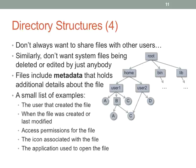The metadata includes: the user that created the file, when the file was created or last modified, access permissions, icon associated with the file, and application or applications that can be used to open it. Typically that last one is stored somewhere else — you use the extension to figure that out, although some operating systems are clever enough to associate that with individual files.